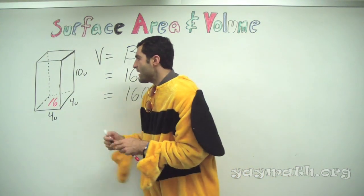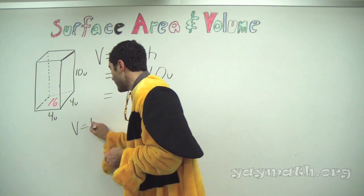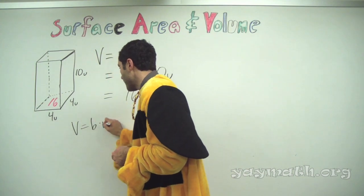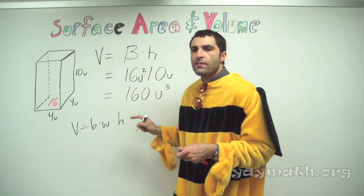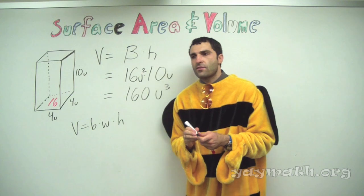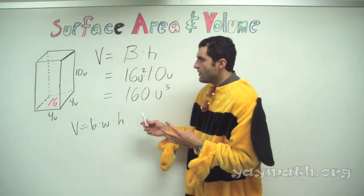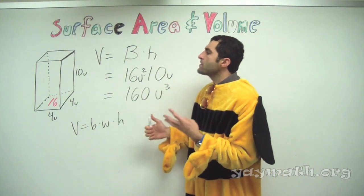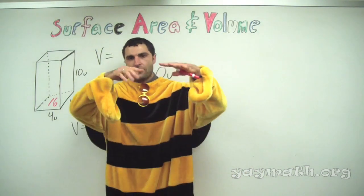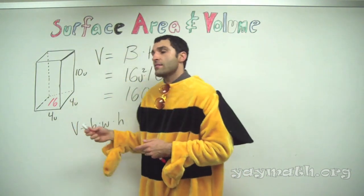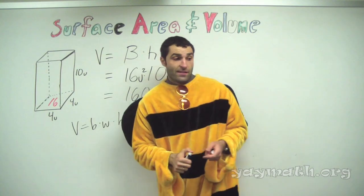Many books say the volume formula is base times width times height. I reject this — I think it's empty. It doesn't talk about the wisdom behind how this works. It's about stacking up to the top of the dome. The formula B times h does that.